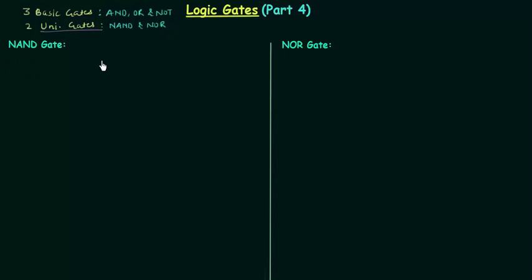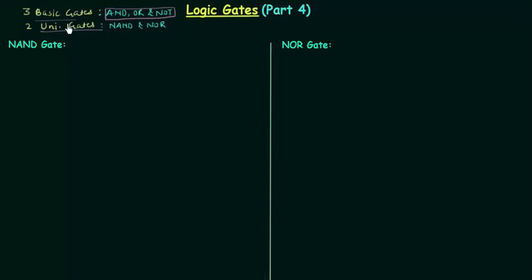By universal gates we mean that by using NAND gate or NOR gate we can implement any digital system. On the other hand, we can implement any digital system by using the 3 basic gates: AND, OR, and NOT. NAND gate and NOR gate are not basic gates, so we have to obtain NAND gate and NOR gate by using the basic gates. Let's see how we can obtain NAND gate using basic gates.